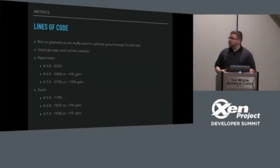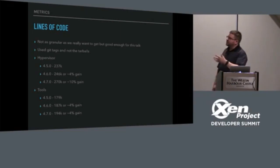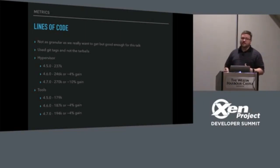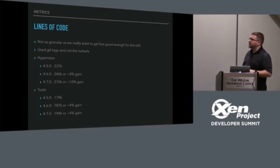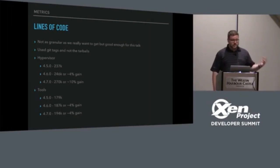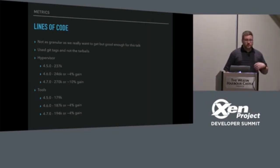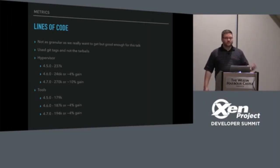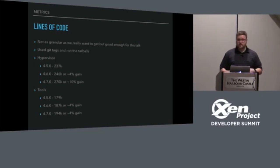Going into the metrics of Xen — staying very high level — I chose two parts of Xen: the hypervisor and the tool stack. As you can see, the hypervisor is growing and the tool stack is growing, but not at a large enough pace. It's a large code base and it's ever growing.